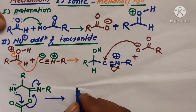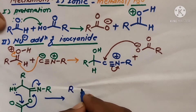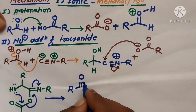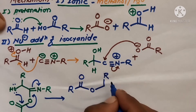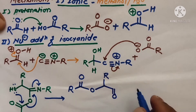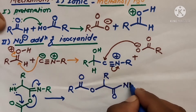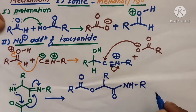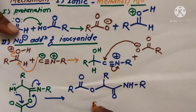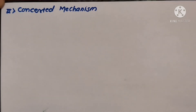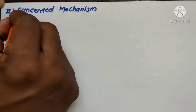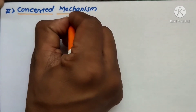This forms the final product: R-C(=O)-O-R with C(=O)-NH-R groups — that is, the alpha-acyloxy amide compound. The Passerini reaction also proceeds via a concerted-type reaction mechanism.